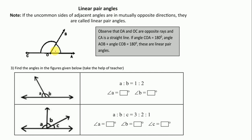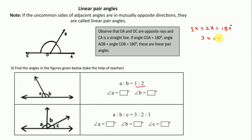Let's move to the next one: Linear pair angles. The figure shows linear pair angles. Question number 3 is to find the angles in the figure below. A is to B is equal to 1 is to 2. We take the ratio as 1x and 2x. The sum of these two angles is 180 degrees.